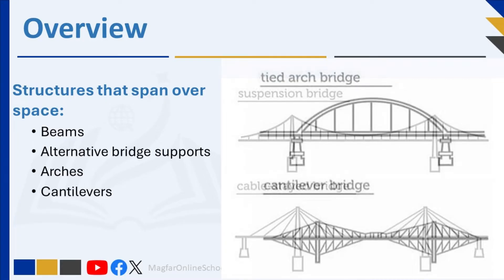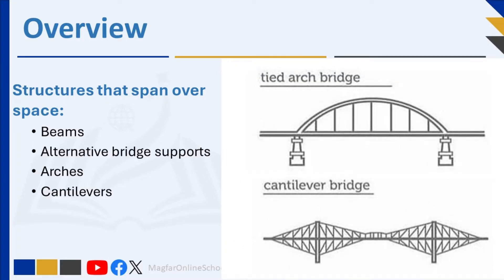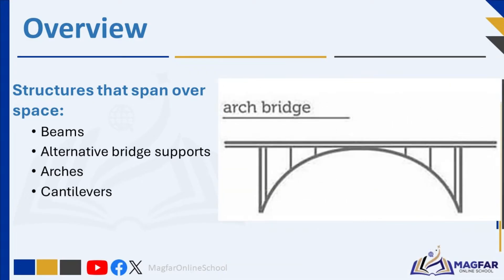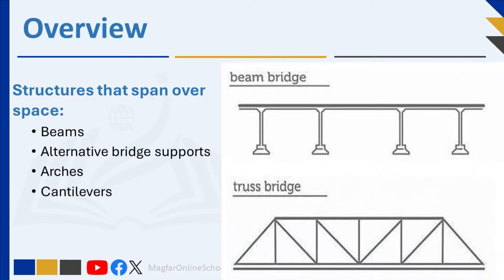There are many different types of structures that span a space, and these include beams, alternative bridge supports, arches, and cantilevers. Today we will discuss these in more detail.